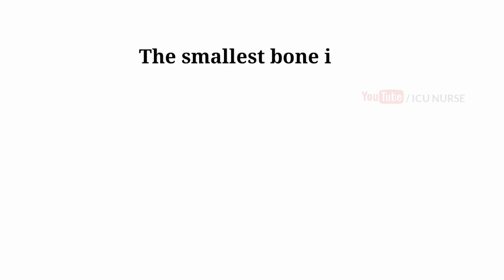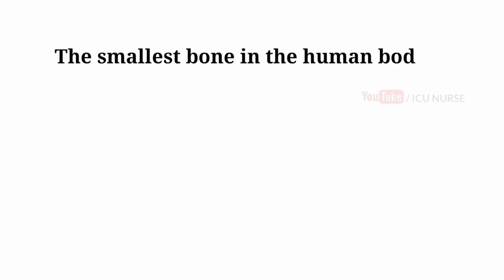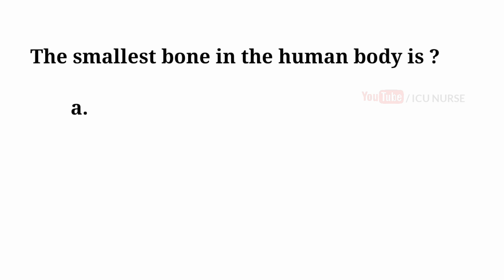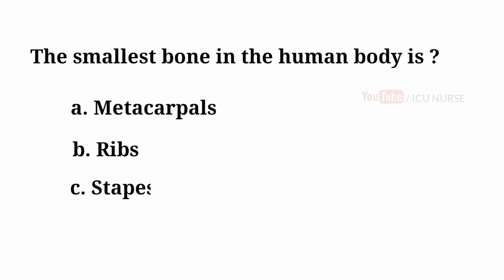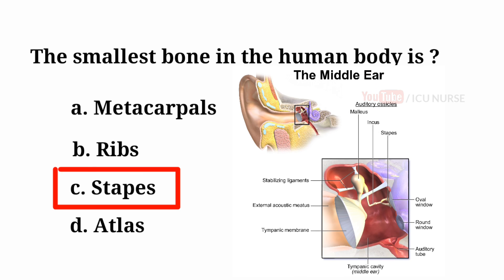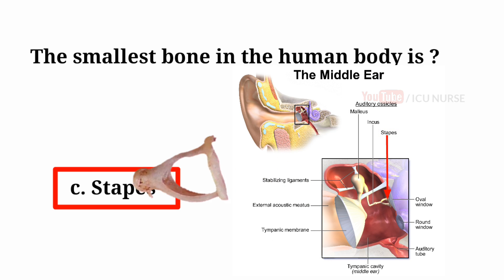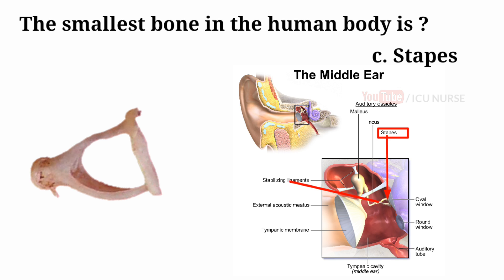The smallest bone in the human body is: A. Metacarpals, B. Ribs, C. Stapes, D. Atlas. And the answer is C. Stapes. The smallest bone in the human body is Stapes.